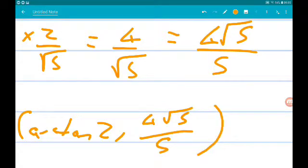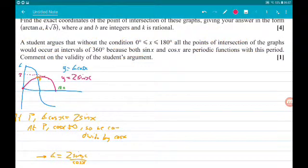So if a student argues that without the condition x is between 0 and 180, all of the points of intersection would occur in intervals of 360 degrees. Because both sin of x and cos of x are periodic functions with that period, we want to comment on the validity of the student's argument.